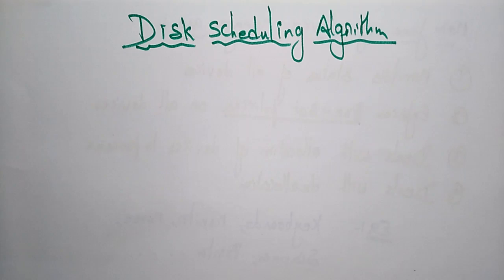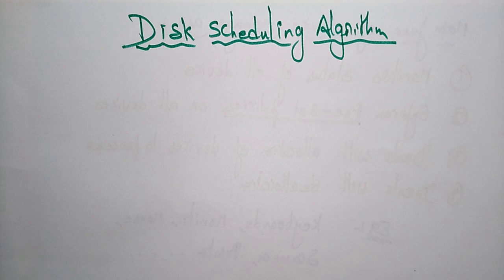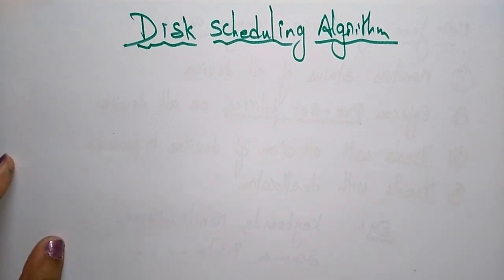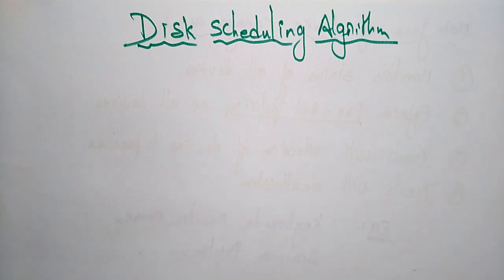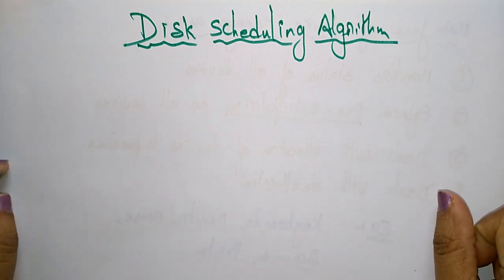Coming to the next topic in operating systems: disk scheduling algorithms. Different processes want to store and retrieve data on the disk, so multiple IO requests arrive at the disk simultaneously. At that time, the operating system has to schedule which process gets served first — that is what the disk scheduling algorithm explains.